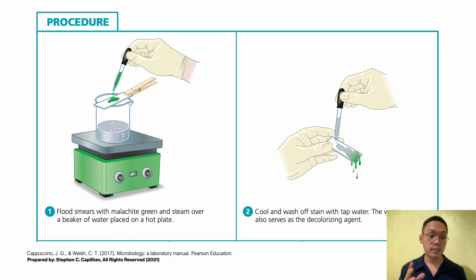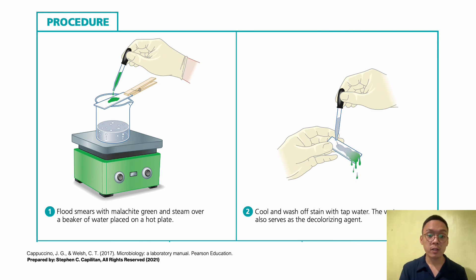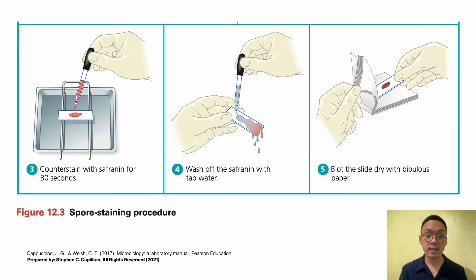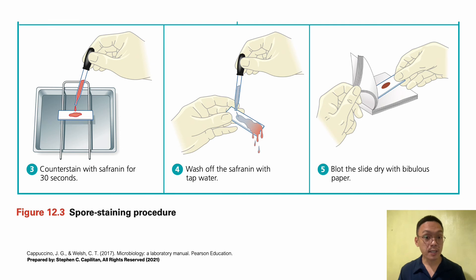The spore staining procedure summary: flood the smear with malachite green and steam over a beaker of water on a hot plate. Cool and wash off the stain with water — the water serves as your decolorizing agent. Counter stain with safranin for 30 seconds, wash off with water, and blot dry with bibulous paper.